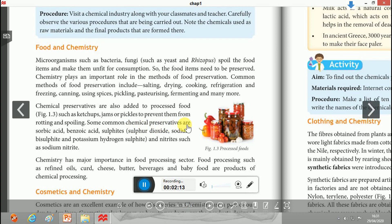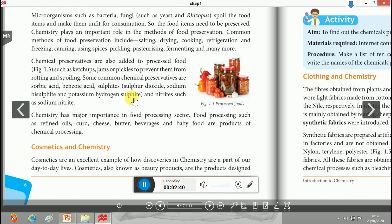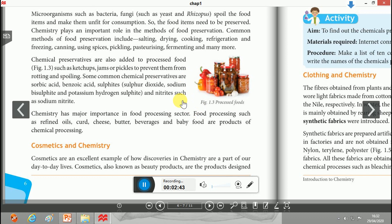Some common chemical preservatives are sorbic acid, benzoic acid, sulfites, sulfur dioxide, sodium bisulfite, potassium hydrogen sulfite or potassium bisulfite, and sodium nitrite. These chemicals are used to prevent spoiling of food items.